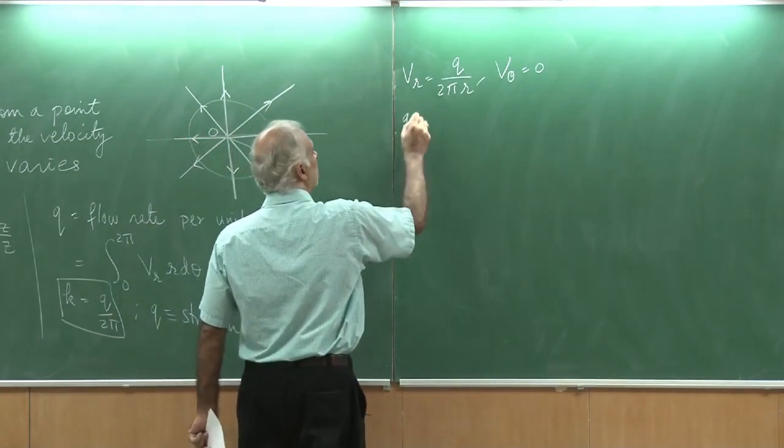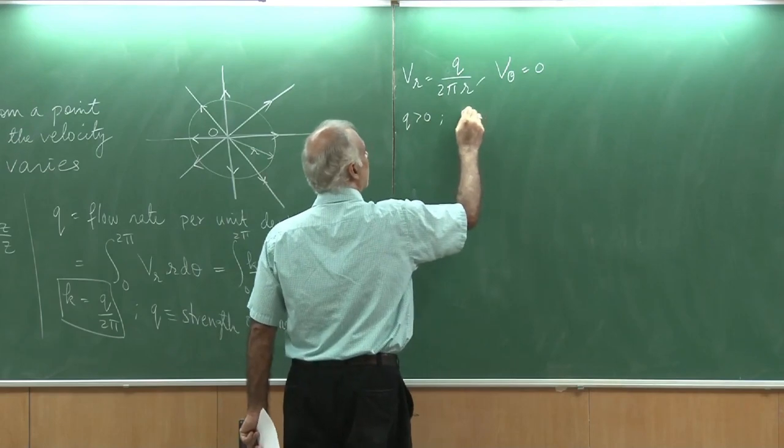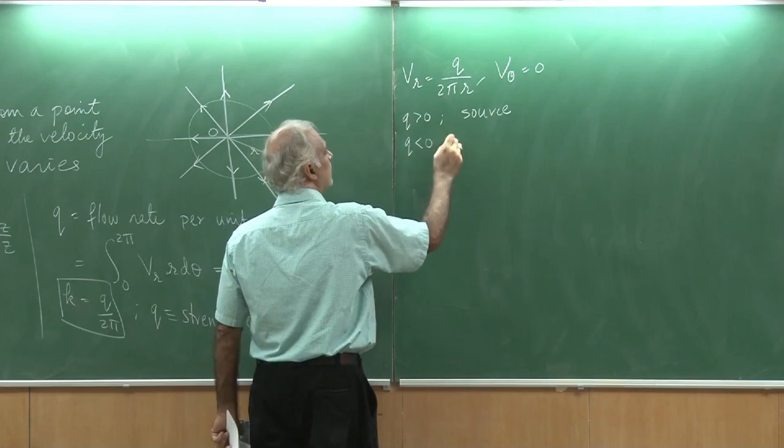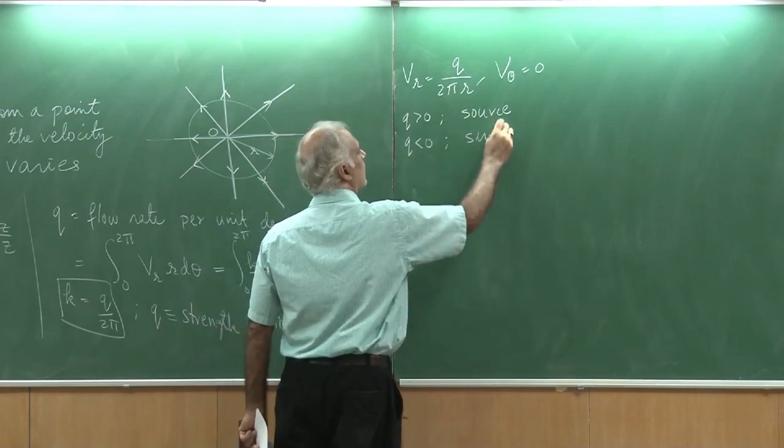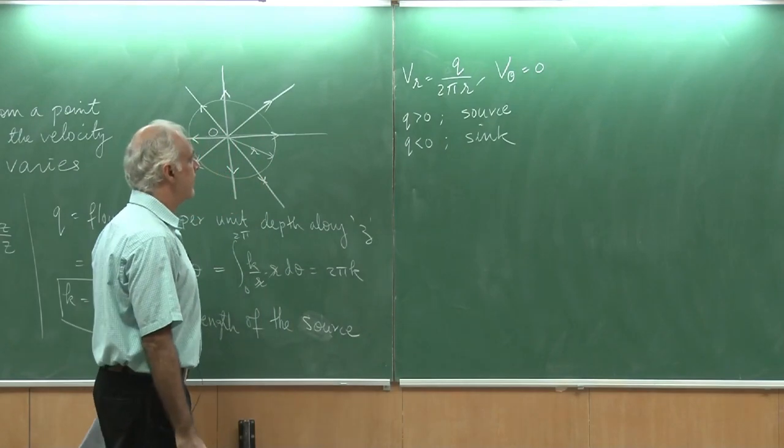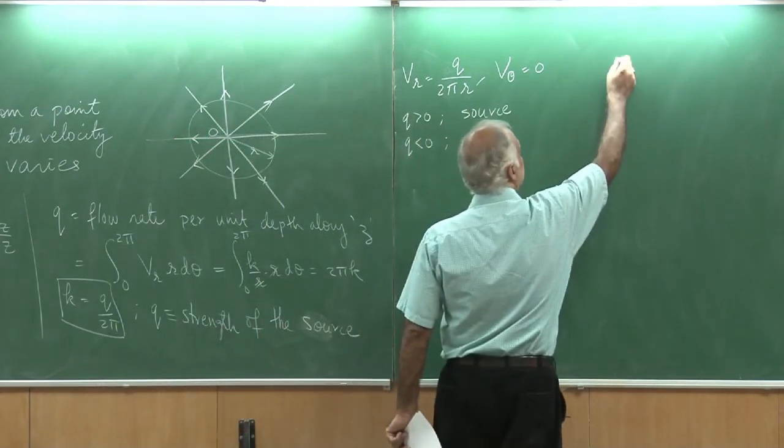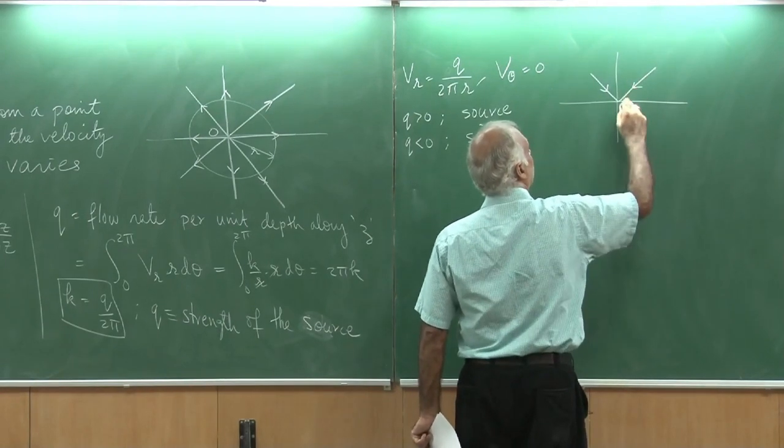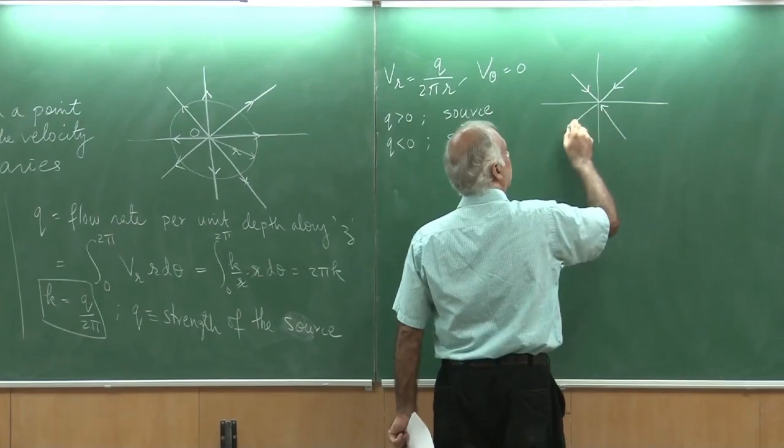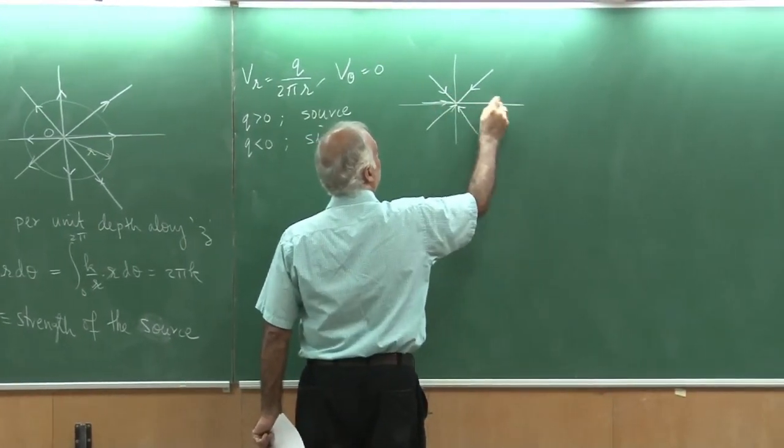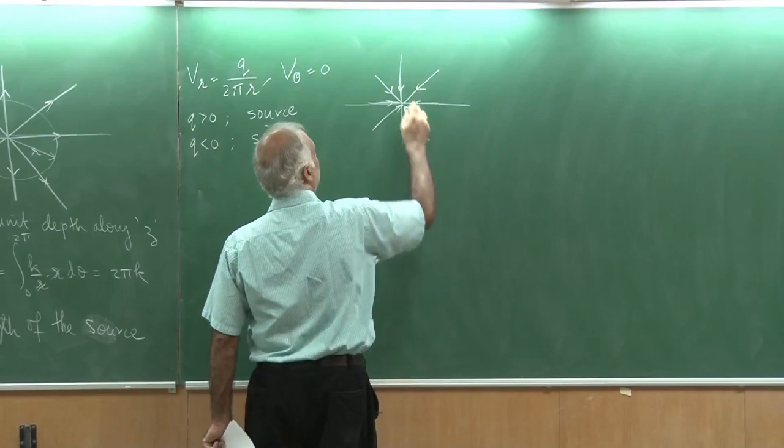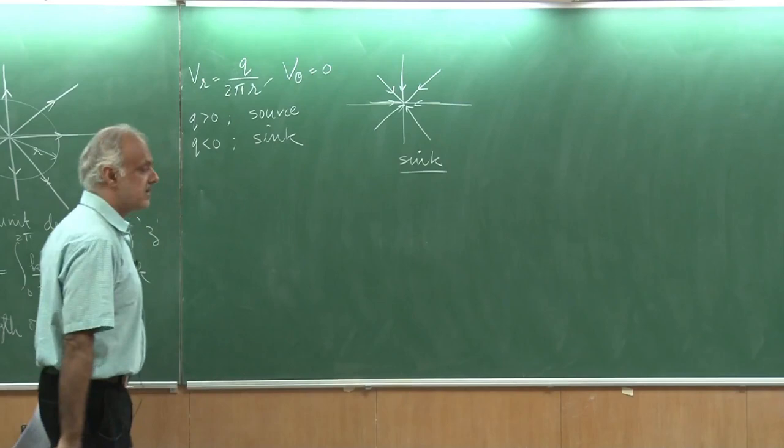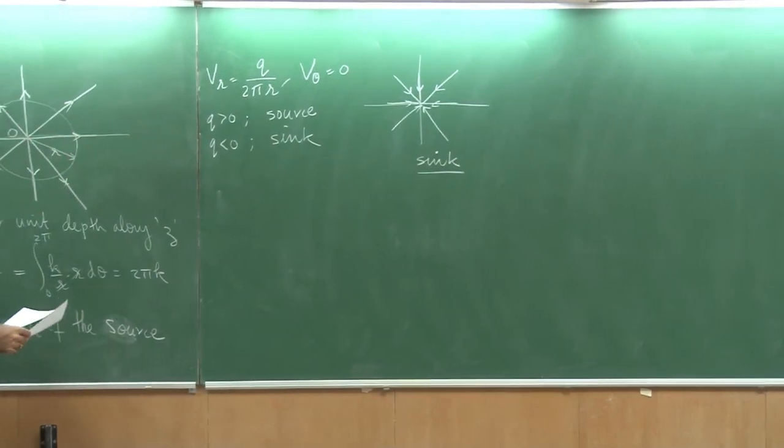For q greater than 0, I have what is called as a source, but if q is less than 0, then I get what is called a sink. A sink would be something like this, where all the flow is going radially inward.